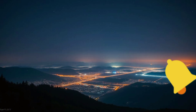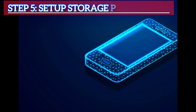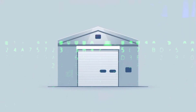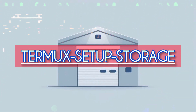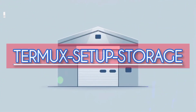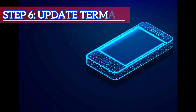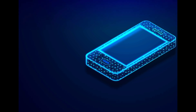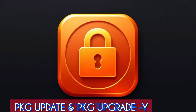Step 5: Setup Storage Permissions. Launch Termux and run the following command to set up storage: termux-setup-storage. Step 6: Update Termux. Update and upgrade Termux using this command: pkg update and pkg upgrade -y.